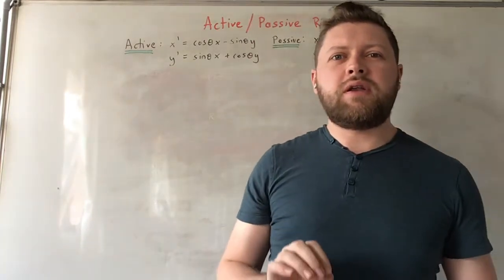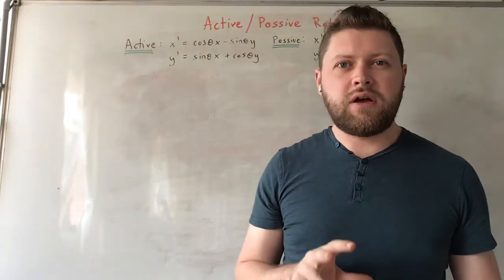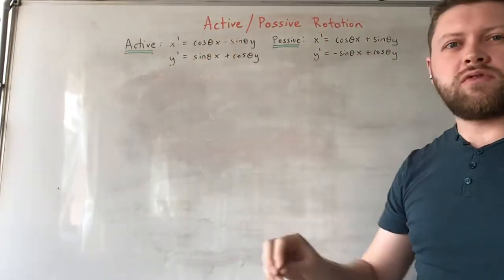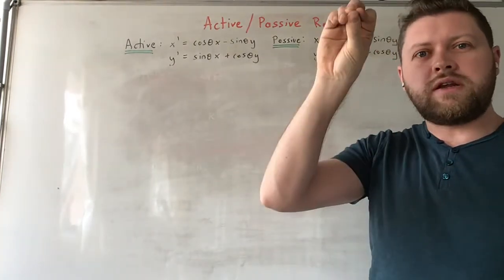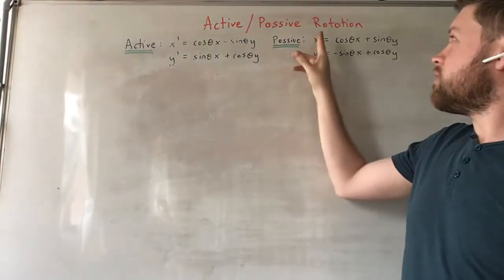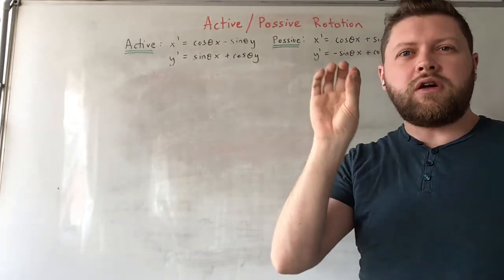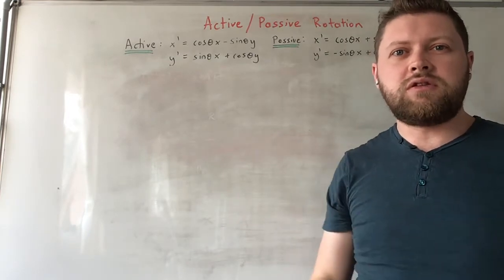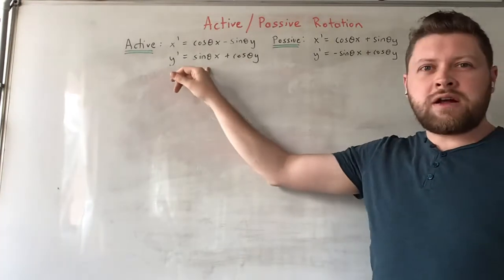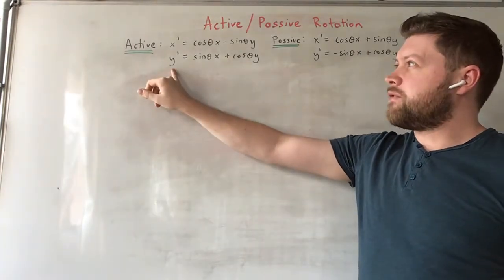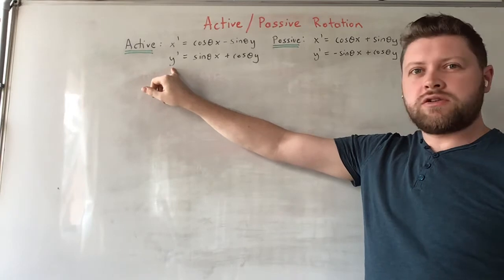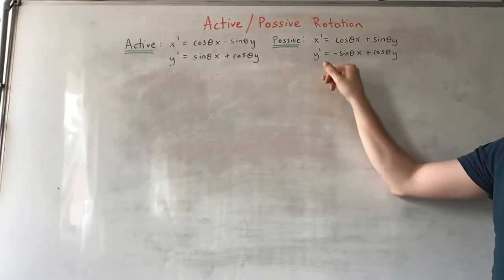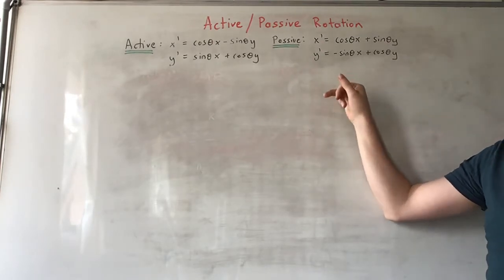I'd like to quickly re-examine active versus passive rotations. From a previous video, an active rotation was when the point itself was rotated, whereas a passive rotation was when not the point but the axes were rotated. There was a definite difference between the two transformations. With the active transformation we got new coordinates x-dash, y-dash given by one set of expressions, and with the passive transformation we got new coordinates given by a different set of expressions.